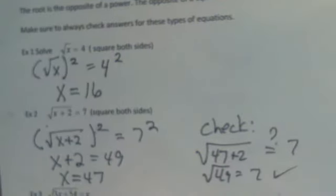So if I were to check this, I would check 47 plus 2. Does that equal 7? Square root of 49 is 7. So yes, that's a true statement, and that solution checks out.